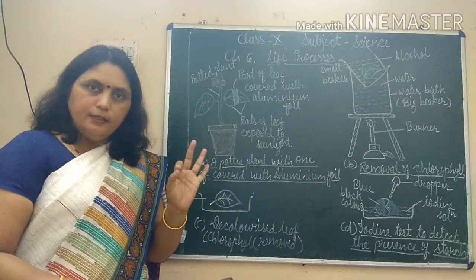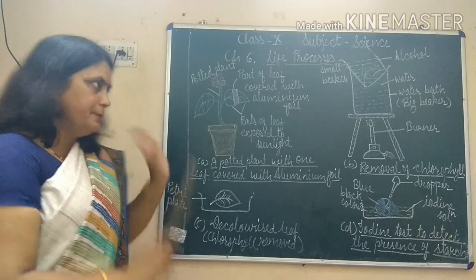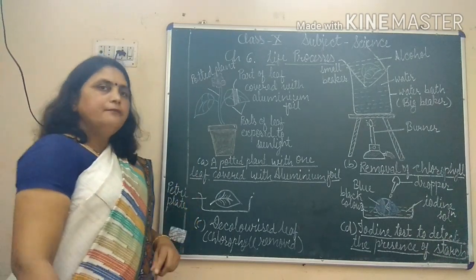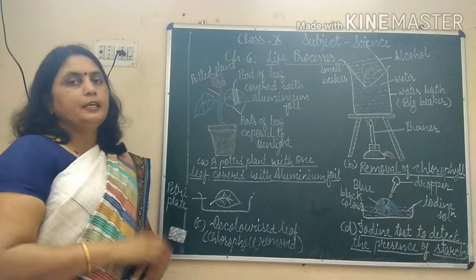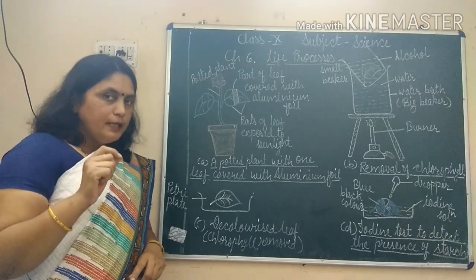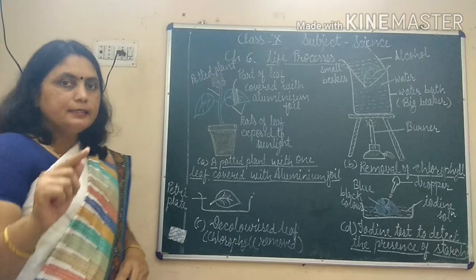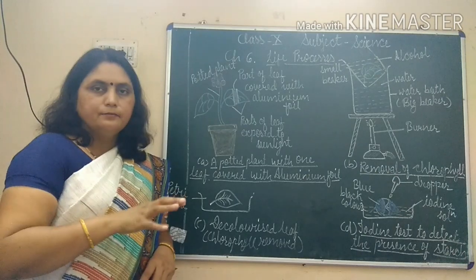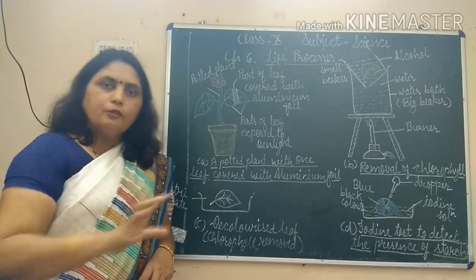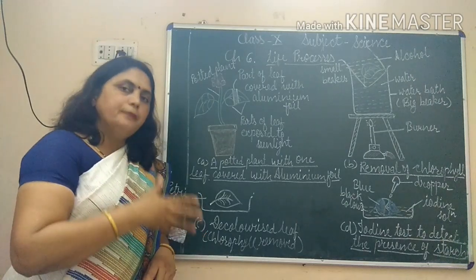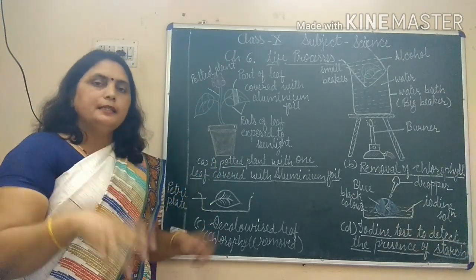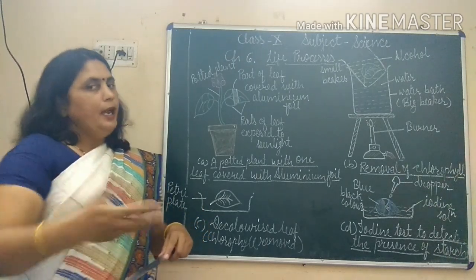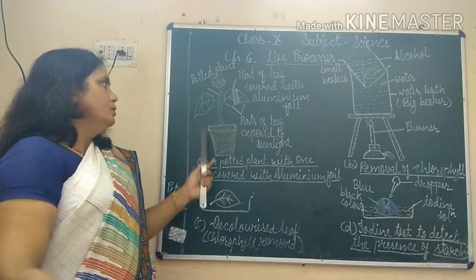Now you will be able to understand this experiment. We take a potted plant and keep it for three to four days in complete darkness. When placed in complete darkness, no photosynthesis takes place, which means the whole amount of starch stored in the plant is utilized by the plant to produce energy, and no new glucose is formed.